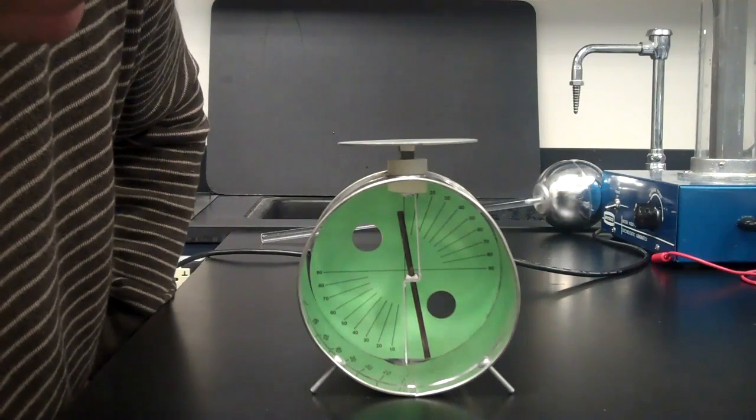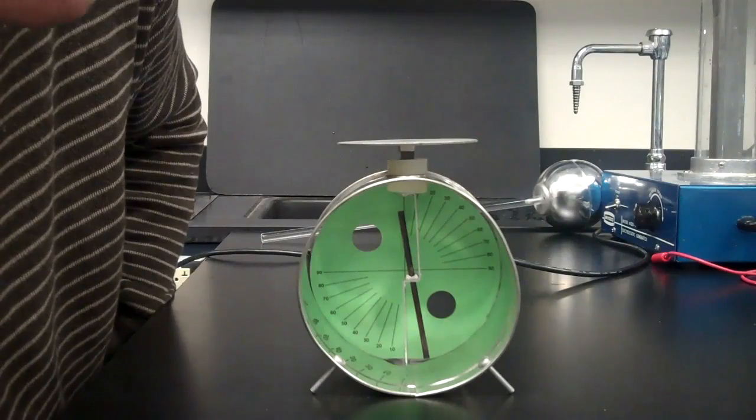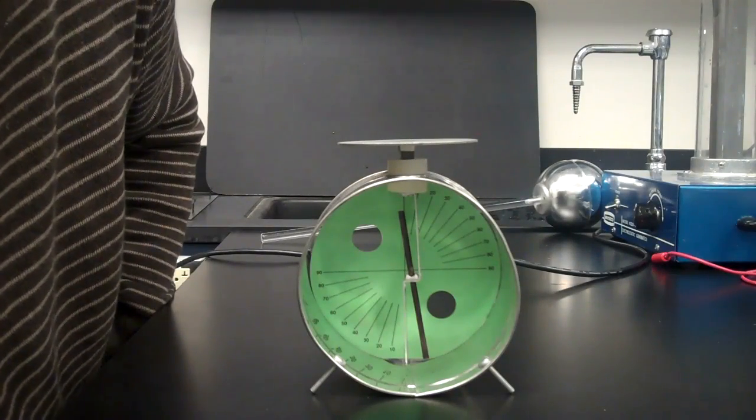If I put my finger on the plate of the electroscope it will allow electrons to be attracted back into the electroscope and become neutral once more.